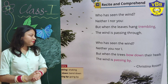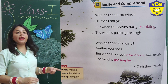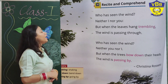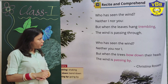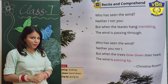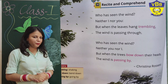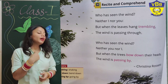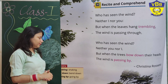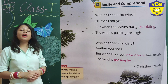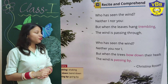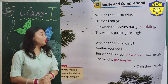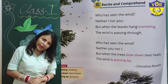We have done both the paragraphs. Now we will read both paragraphs again together. 'Who has seen the wind? Neither I nor you. But when the leaves are bending, the wind is passing through.' I hope you all have understood the meaning of this poem. Read this poem at home and tell the meaning to your parents also.